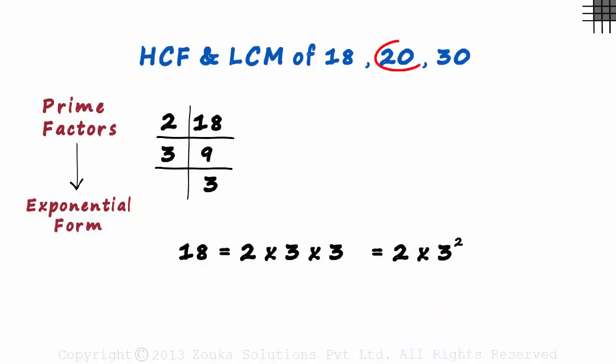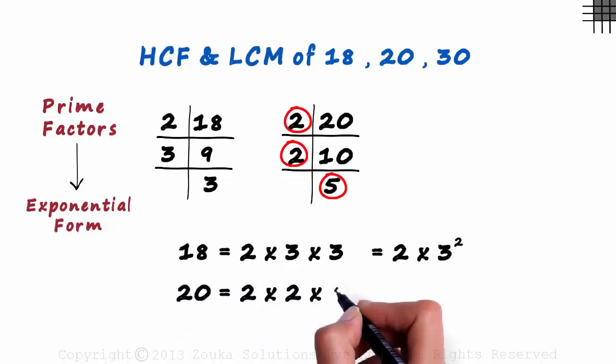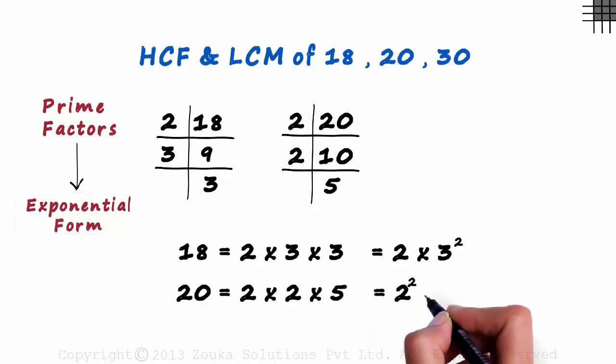Let's move on to the second number which is 20. It is divisible by 2 and the quotient is 10, which is also divisible by 2. 2 times 5 is 10. Then we stop here as we got a prime number. 20 can be written as 2 times 2 times 5, and in exponential terms can be written as 2 squared multiplied by 5.